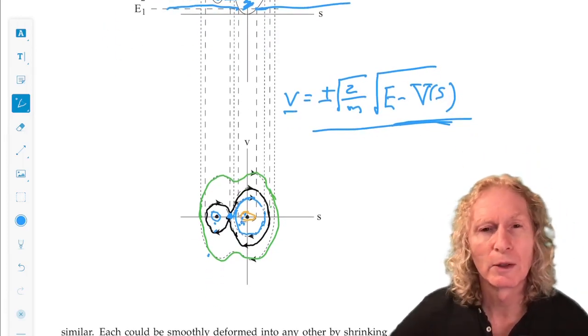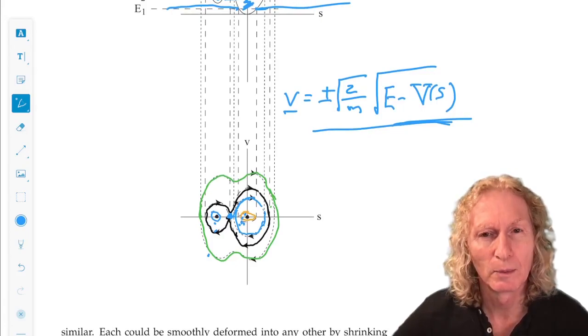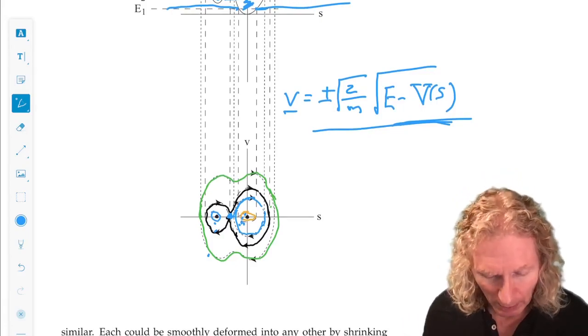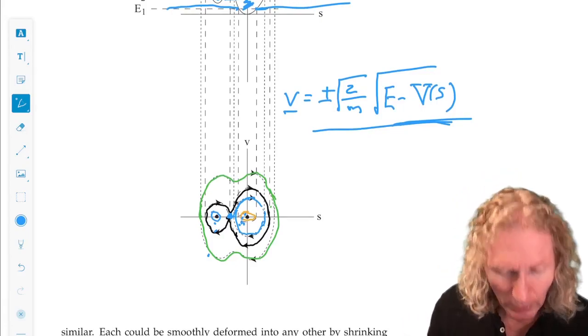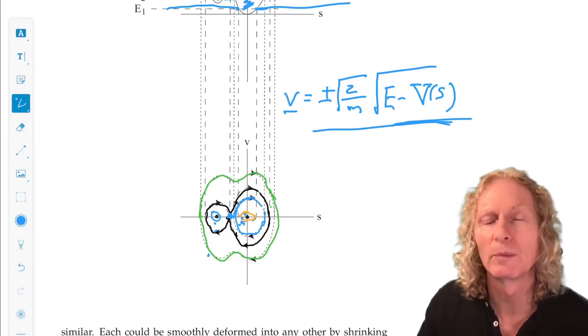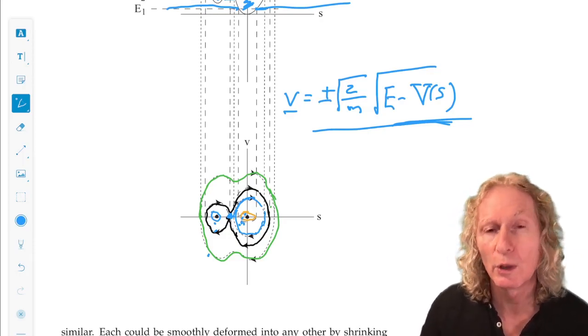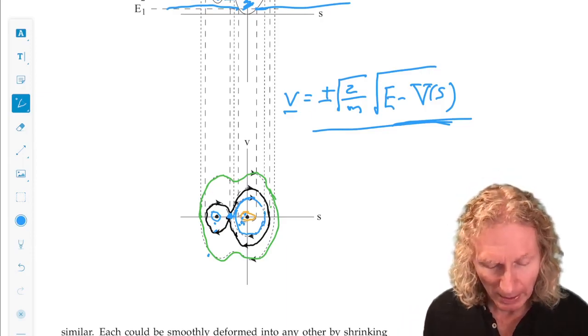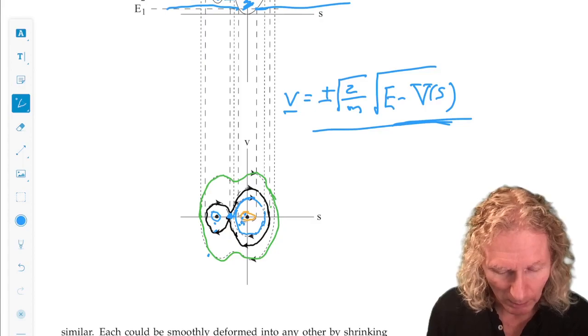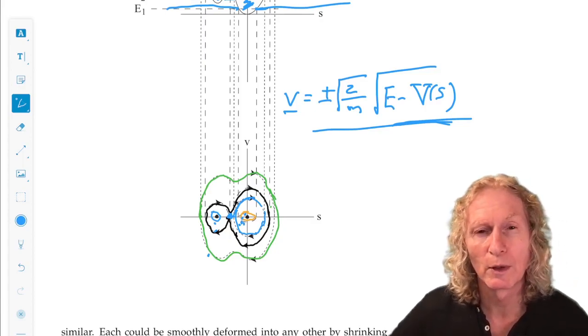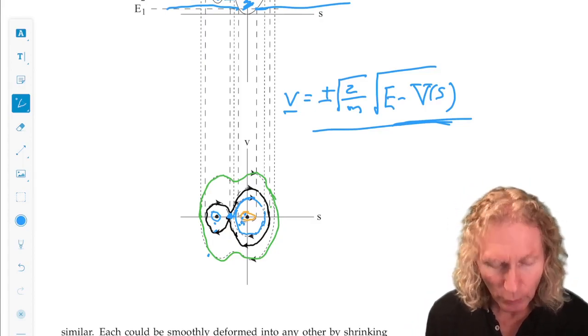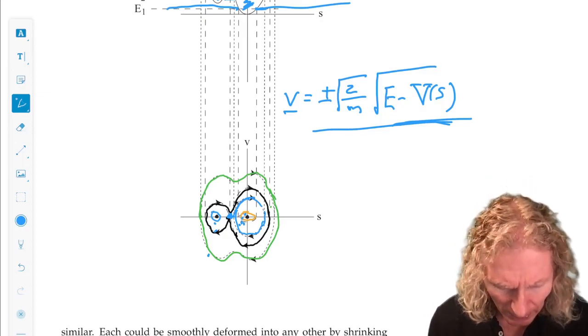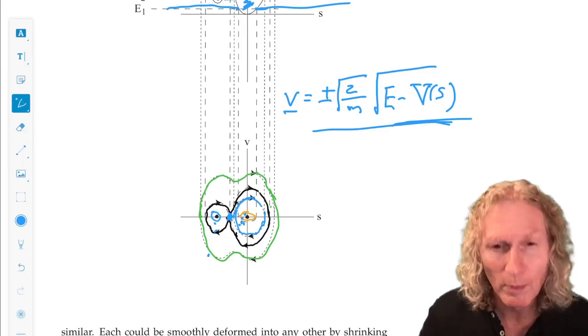So this is a more interesting phase plane. We get two families of periodic orbits, or periodic trajectories, or closed level curves of the energy function. And we get a family encircling both of those on the outside, and two separatrices that intersect at a local maximum.